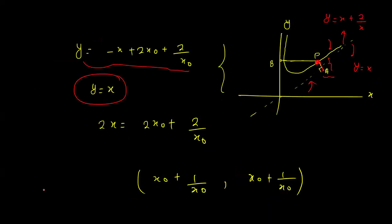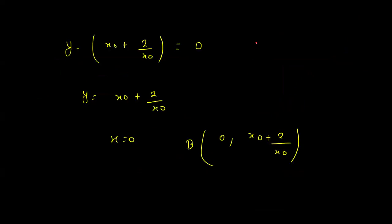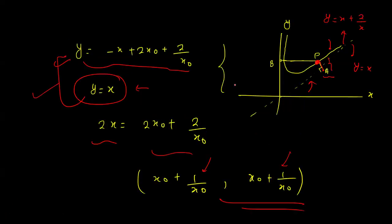We find the coordinate of A by solving the two equations. Substituting y = x into the line PA equation gives 2x = 2x₀ + 2/x₀, from which we find the x-coordinate of A. Since y = x, both coordinates are equal, so A = (x₀ + 1/x₀, x₀ + 1/x₀).